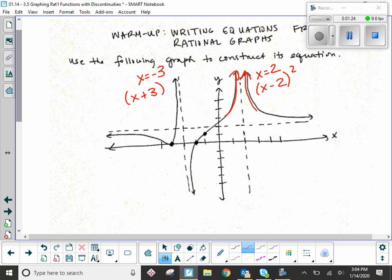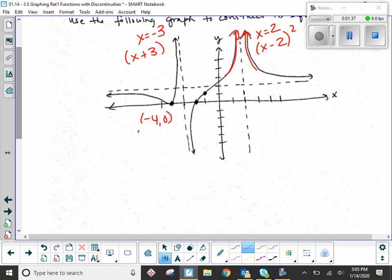So do I have any more asymptotes? No. So we did that fine. How many roots are there? Two. So there's one here at negative 4, 0. What factor gives me that? x plus 4.